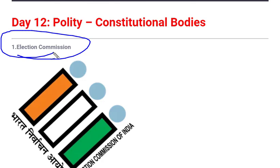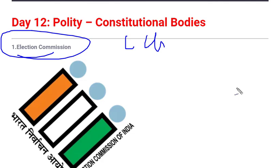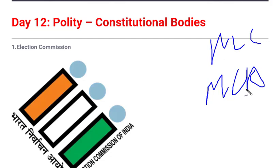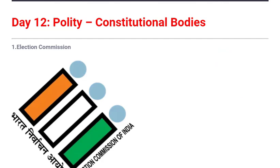The first constitutional body we are going to discuss is the Election Commission — a body responsible for conducting elections. We have a federal type of government, meaning we have a Union government at the central level and state governments at the state level. Elections have to be conducted for both, as without elections we cannot choose members of Parliament or members of the legislative assembly. This body needed to be independent and derive power directly from the Constitution.